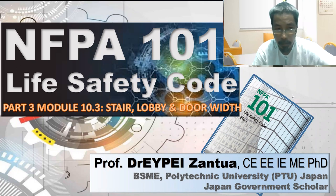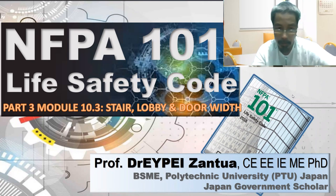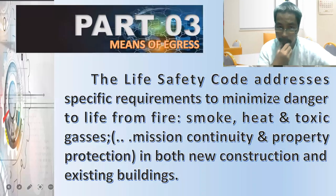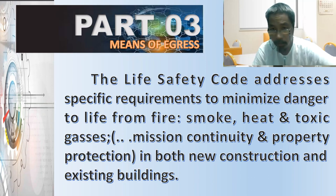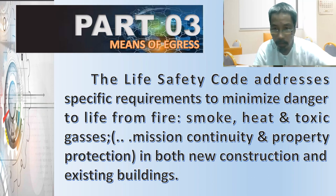In this video, we continue Module 10, Part 3 of NFPA 101 Life Safety Code. We will discuss stairs, lobby, and width as sub-topic number three. The objective of NFPA 101 is to address specific requirements to minimize danger to life from fire, including byproducts such as smoke, heat, and toxic gases. It also provides property protection for both new construction and existing buildings.